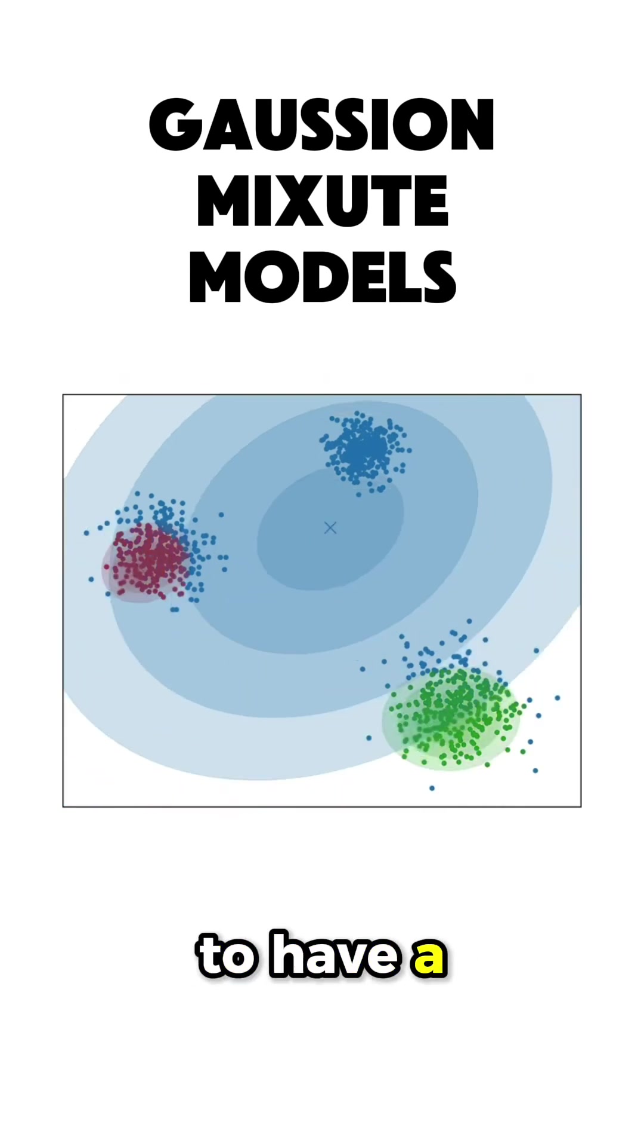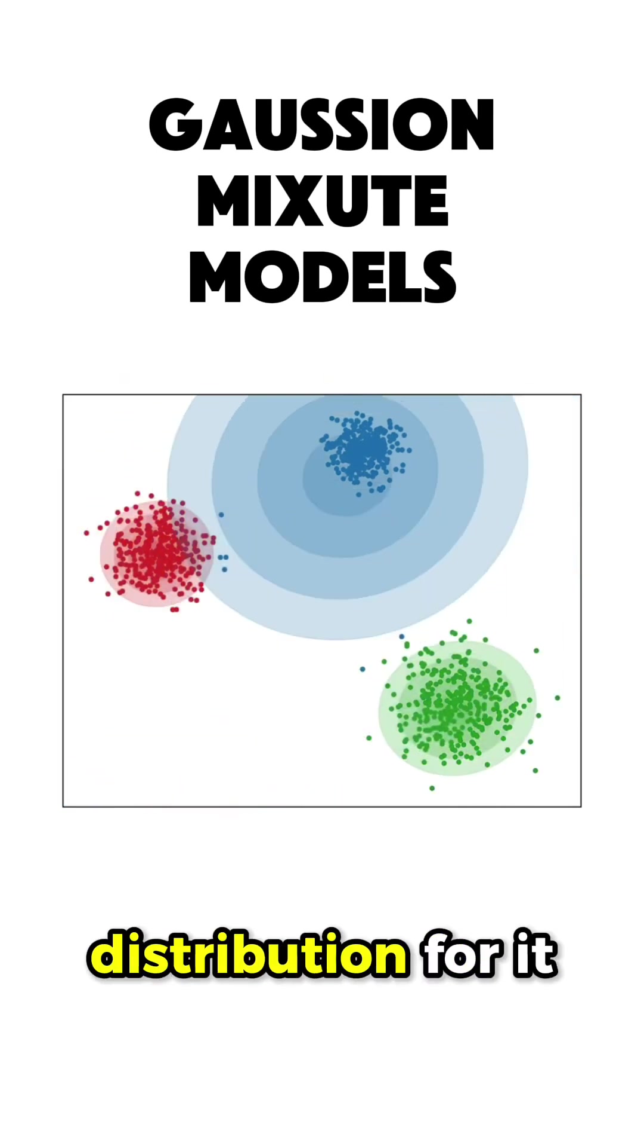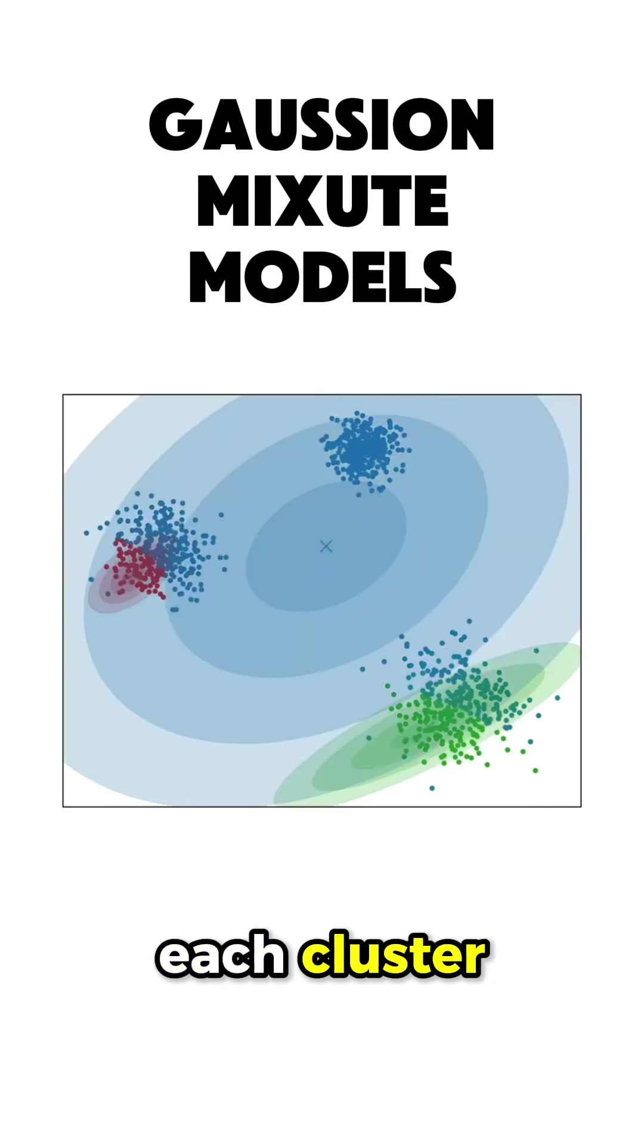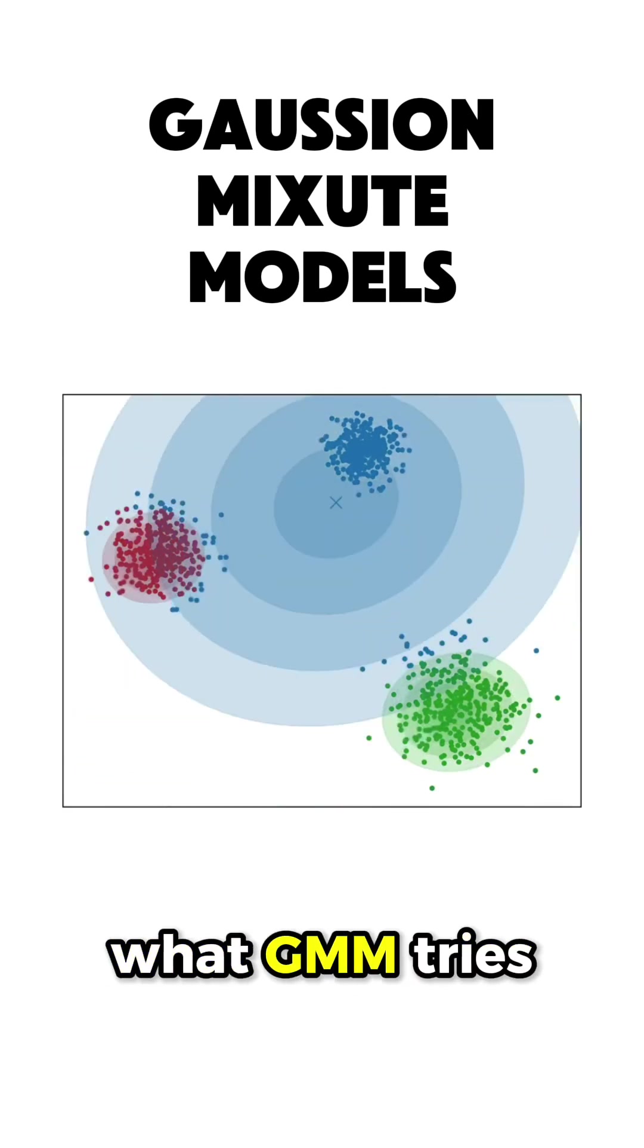So, in order to have a much more representative distribution for it, you need to fit a Gaussian on top of each cluster, which is basically what GMM tries to achieve.